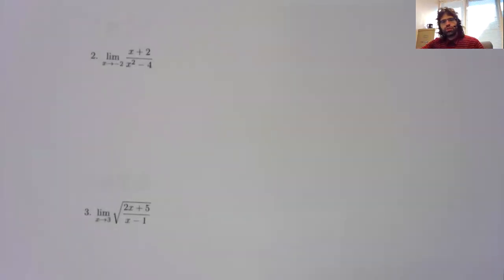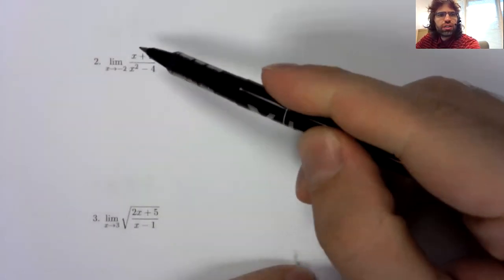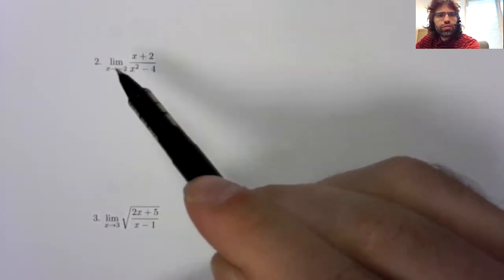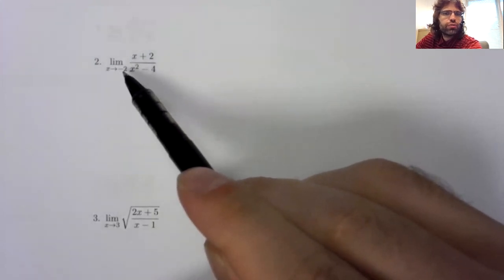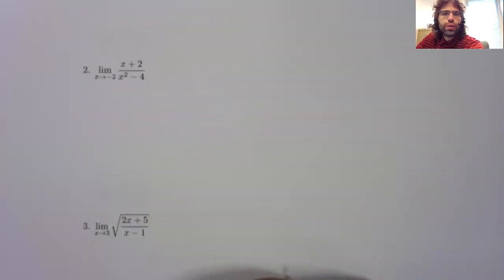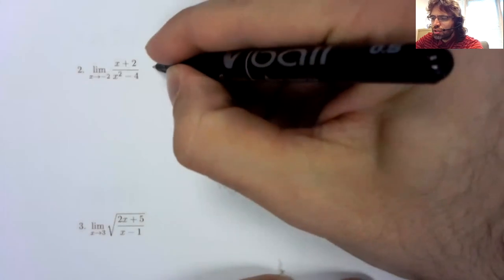So, number two. Well, everything here is continuous, so we could just stick negative two in, except that doing that gives us a division by zero error.